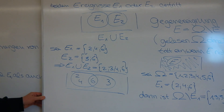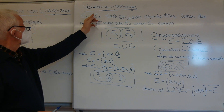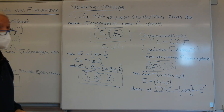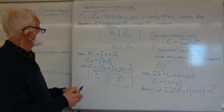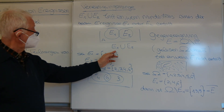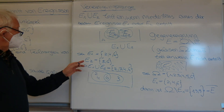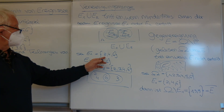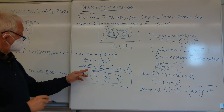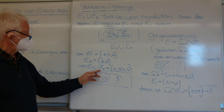Dann gehen wir zur Vereinigungsmenge. Die Vereinigungsmenge wird angegeben als E1 vereinigt – da haben wir dieses Zeichen aus dem großen U. Es tritt genau dann ein, wenn mindestens eines der beiden Ereignisse von E1 oder von E2 eintritt. Wenn zum Beispiel wieder E1 sich zusammensetzt aus den Ziffern 2, 4 und 6 und E2 aus 3 und 6, dann ist die Vereinigung E1 vereinigt mit E2 gleich {2, 3, 4, 6}. Das ist die Vereinigung.